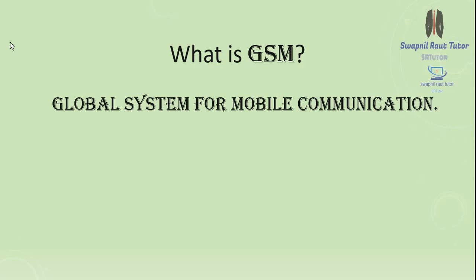GSM communication uses a cellular network. The main goal of GSM is to provide voice services compatible with ISDN or PSTN systems. The GSM standard operates in the frequency ranges of 900, 1800, and 1900 MHz.